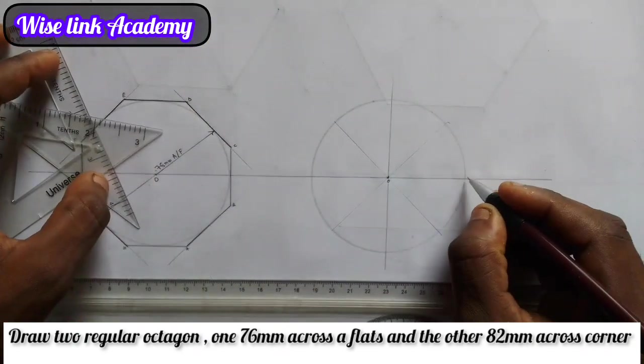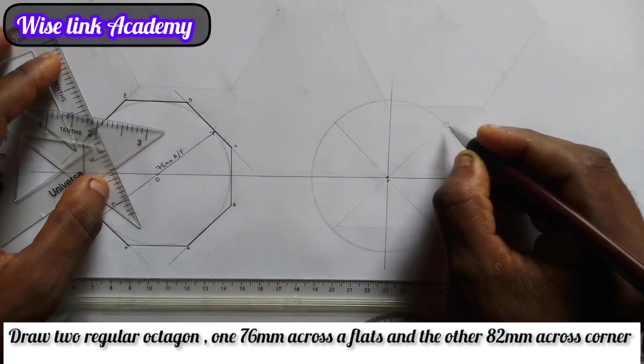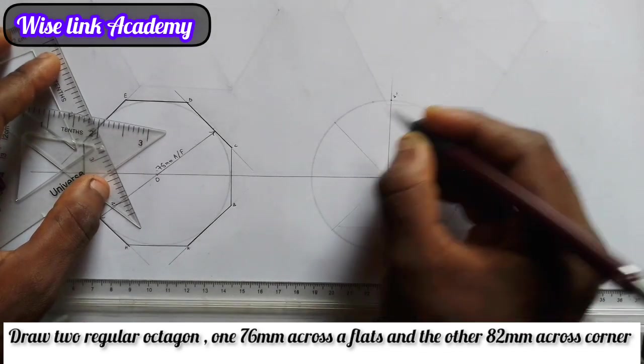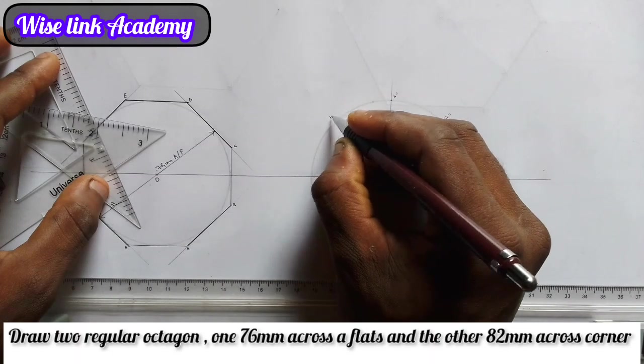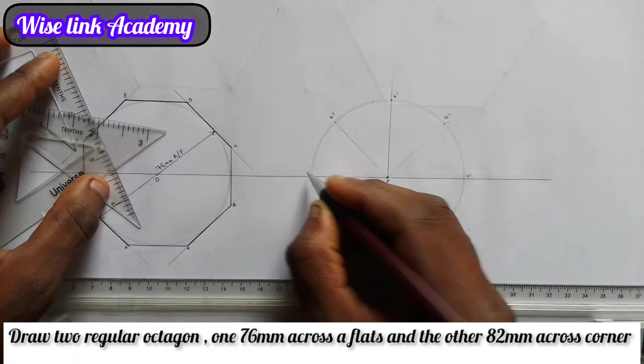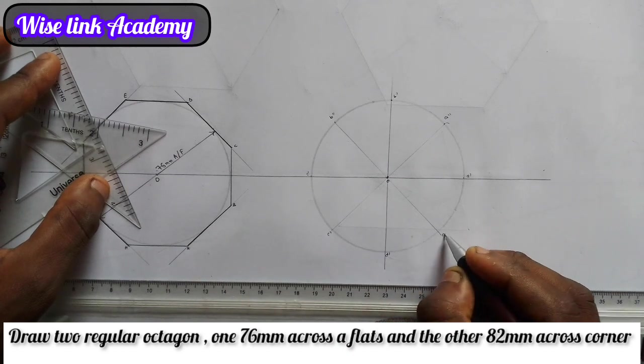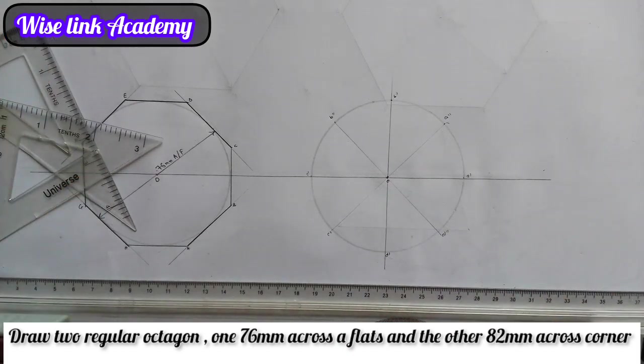So my next task now is to join each point together. Call this point here A prime, call this point B prime, call here B double prime, call here C prime, C double prime, then D prime, lastly D double prime.